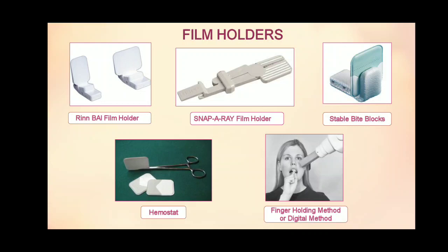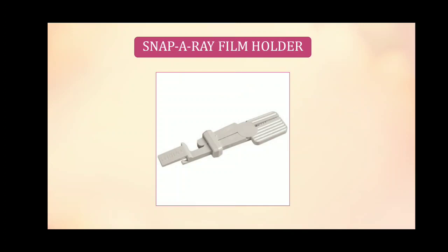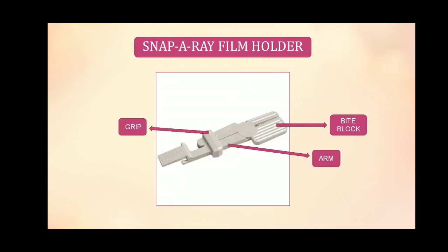There are various film holders used in this technique apart from the patient's finger. These are the RIN film holder, snap-a-ray film holder, stable bite blocks, and a hemostat. The most common one is the snap-a-ray film holder. It contains a bite block on which the patient bites, which is also used to secure the film in position, an arm, and a grip to tighten the holder.